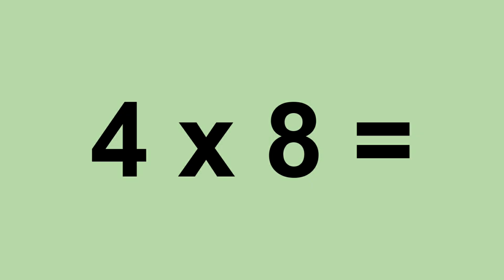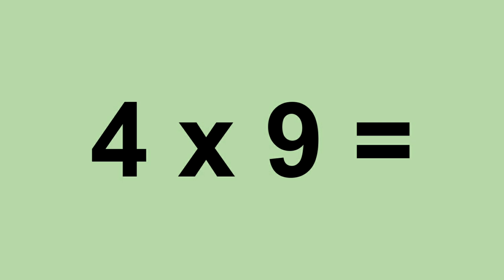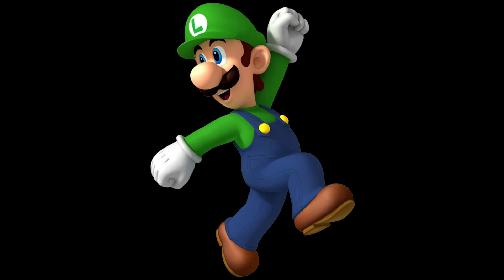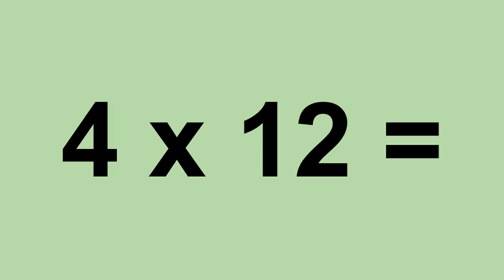Four times eight equals thirty-two. Four times nine equals thirty-six. Four times ten equals forty. Four times eleven equals forty-four. Four times twelve equals forty-eight.